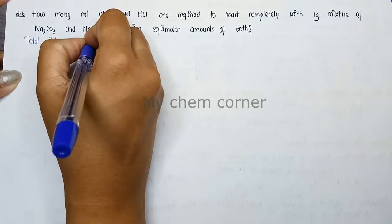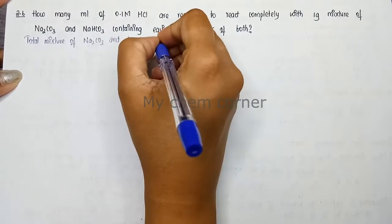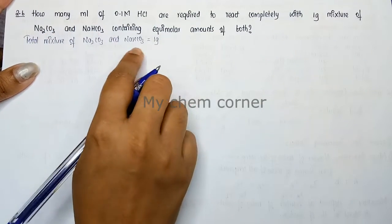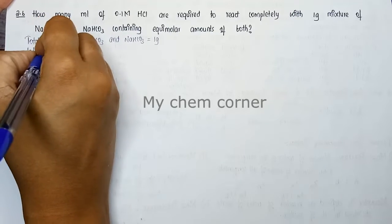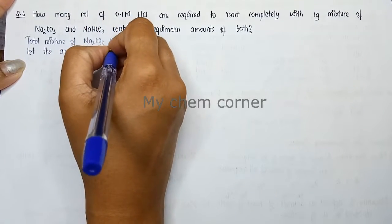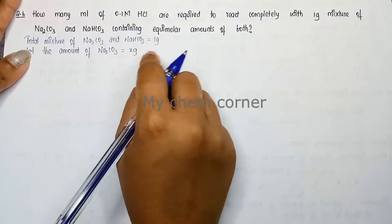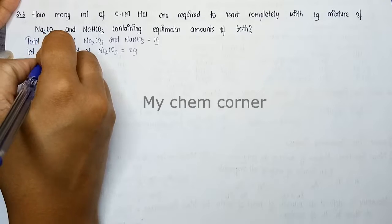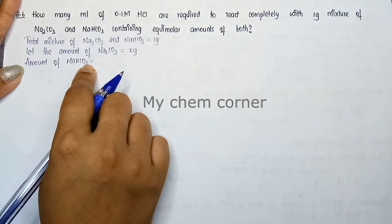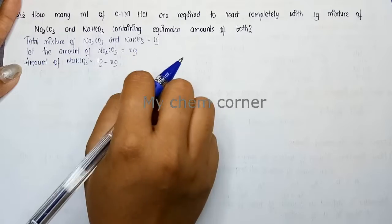The total mixture of Na₂CO₃ and NaHCO₃ is 1 gram. Let the amount of Na₂CO₃ be x grams. Therefore, the amount of NaHCO₃ is (1 - x) grams, since 1 gram is the total mixture and x grams is for Na₂CO₃.